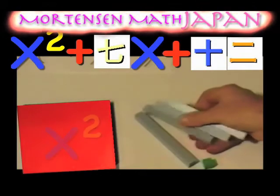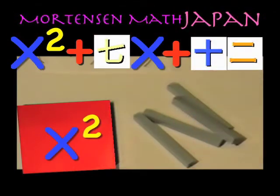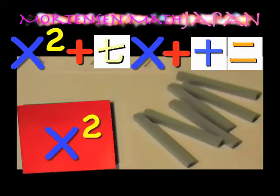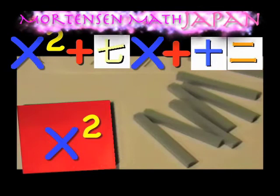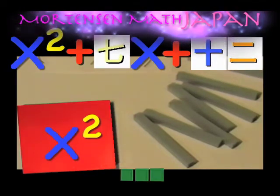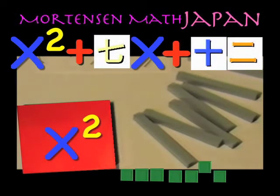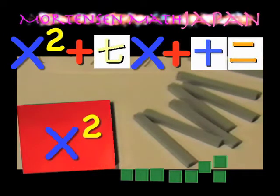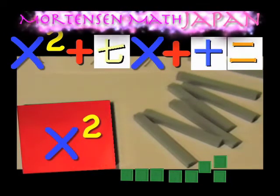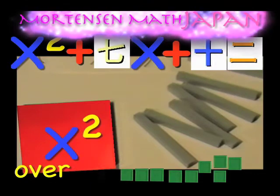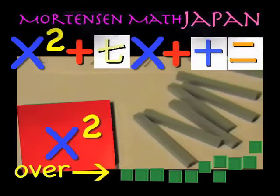7x pieces: 1, 2, 3, 4, 5, 6, 7. And 12 units: 1, 2, 3, 4, 5, 6, 7, 8, 9, 10, 11, 12.